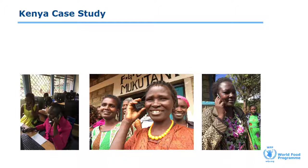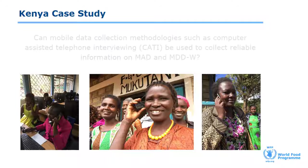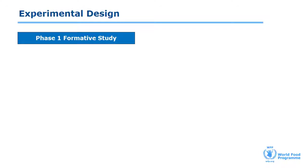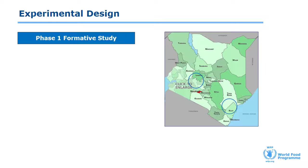We will now briefly focus on a mode experiment we conducted in Kenya to test and validate MDDW and MAD indicators for phone interviews. More in-depth information on the case study can be found in the additional PDF documents. Our main research question was: can mobile data collection methodologies such as CATI be used to collect reliable information on MAD and MDDW? Our mixed method study consisted of two phases. In the formative study, we conducted focus group discussions, key informant interviews and in-depth interviews to understand how women in Kitui and Baringo counties use mobile phones and what potential barriers there are to reaching women.